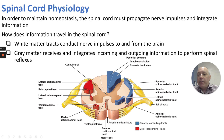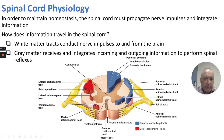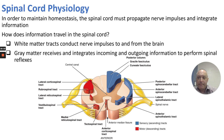To maintain homeostasis, the spinal cord must propagate nerve impulses and integrate information. White matter tracks conduct nerve impulses to and from the brain. Gray matter receives and integrates incoming and outgoing information to perform spinal reflexes. White matter tracks include the posterior column, spinal cerebellar tract, spinothalamic tract, tectospinal tract, medial reticulospinal tract, and anterior corticospinal tract, among others. The white matter consists of axons traveling to and from the brain.